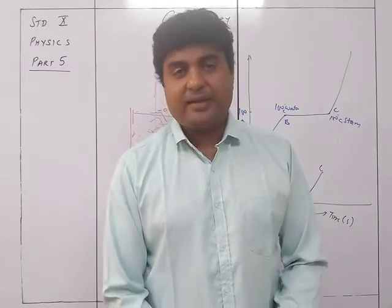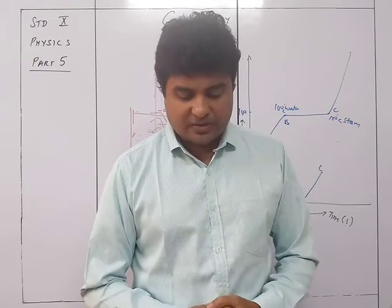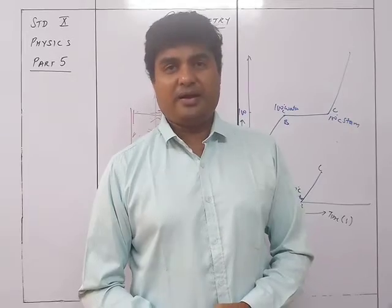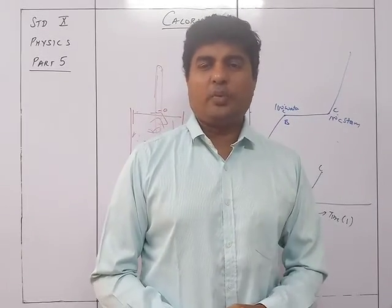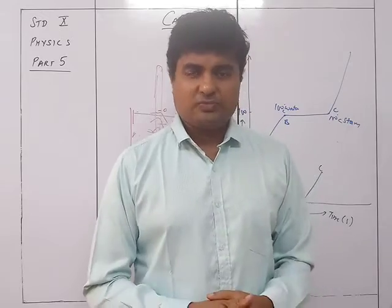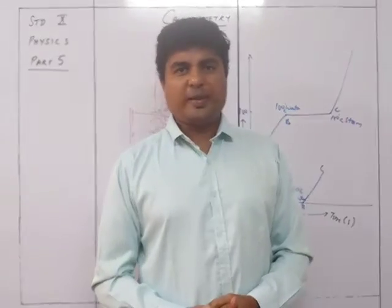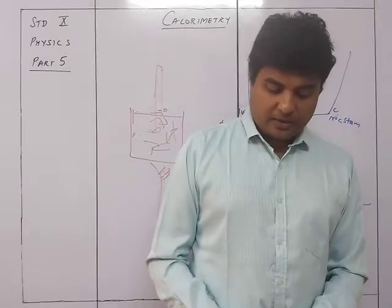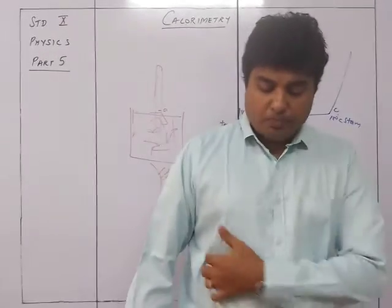Change in volume on boiling: all liquids expand on boiling. For example, one centimeter cube of water at 100 degrees Celsius becomes 1760 cm³ of steam at 100 degrees Celsius — a very drastic change in volume, since gases occupy much more space.